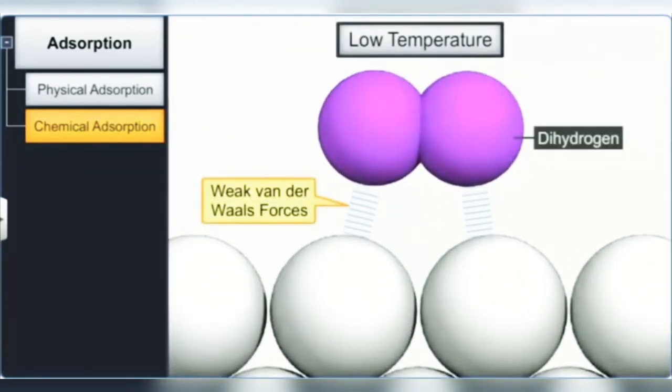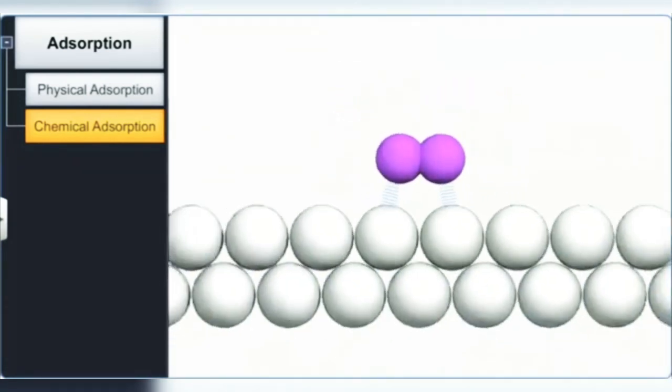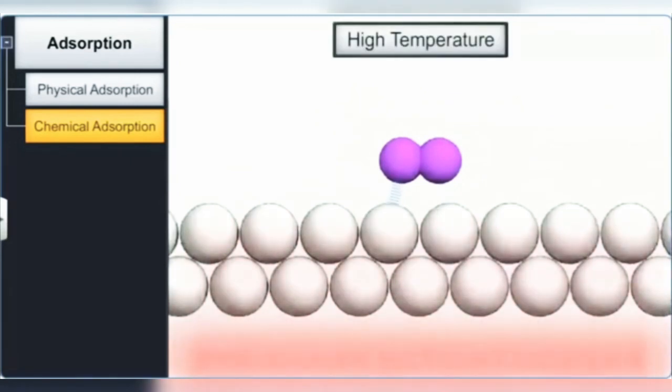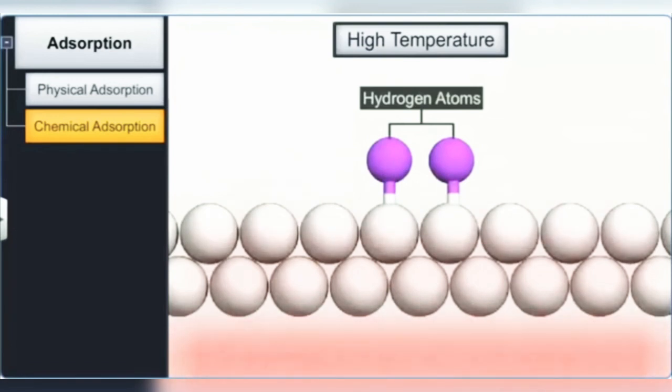In the example of dihydrogen and platinum, on increasing the temperature, the adsorbed dihydrogen molecules on the surface of platinum dissociate into hydrogen atoms. These hydrogen atoms are held strongly by platinum through chemical bonds.